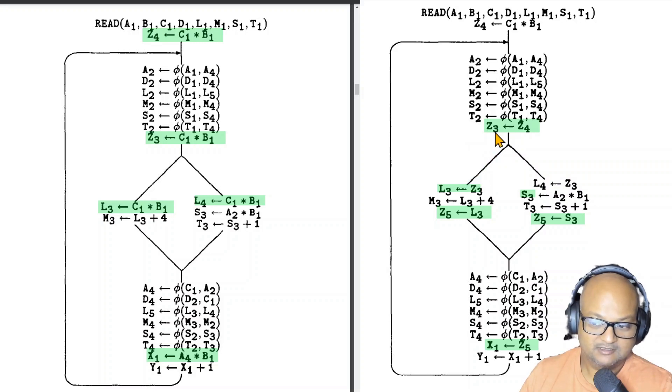And so you can hoist that by introducing a new variable z4 and move it outside the loop over here. And at the end of this process what we've done is moved all the rank one computations to their earliest possible locations. And now that we've done this we can look for all the redundancies that we've found as a result and start eliminating them. So for example z3 over here is simply the same as z4 because it's computing c1 into b1.